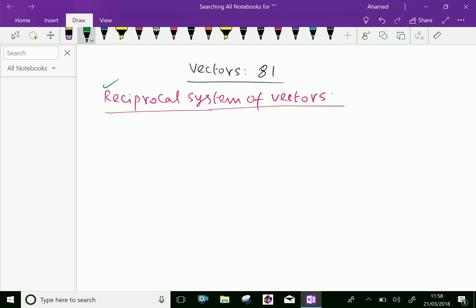If the given vectors are vector A, vector B, and vector C, then the reciprocal system of vectors are: